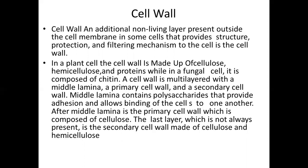The middle lamina contains polysaccharides that provide adhesion and allows binding of the cells to one another. After the middle lamina is the primary cell wall, which is composed of cellulose. The last layer, which is not always present, is the secondary cell wall, made up of cellulose and hemicellulose.